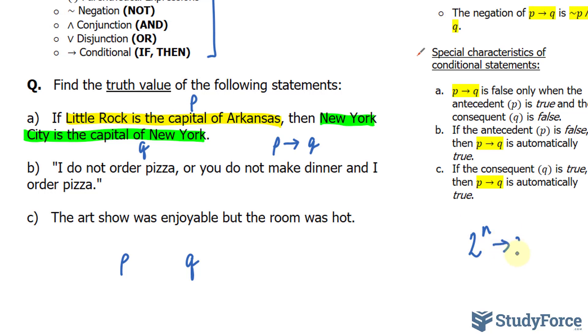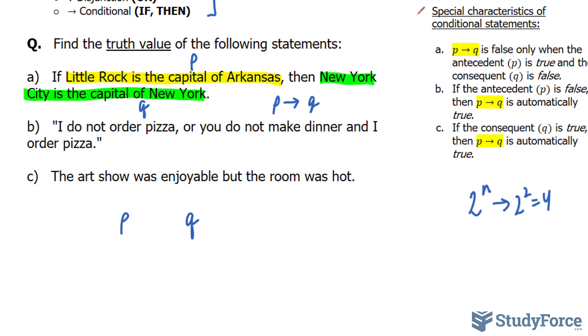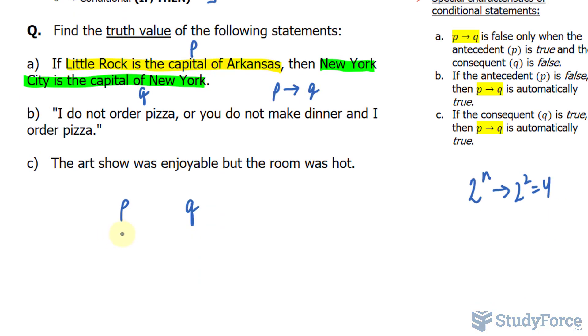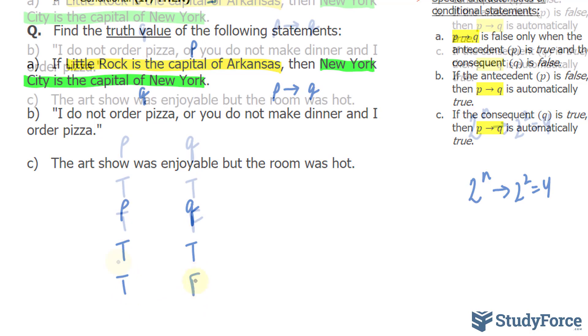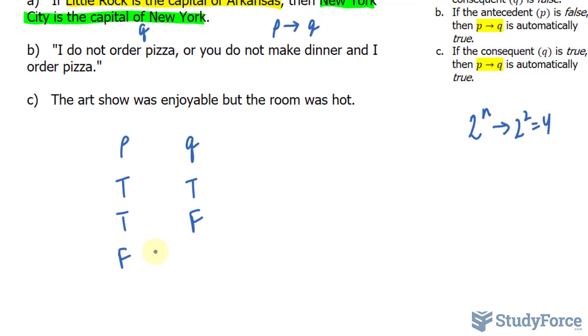So 2 to the power of 2 is equal to 4. We should have 4 combinations: true-true, true-false, false-true, and false-false.